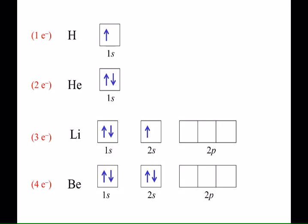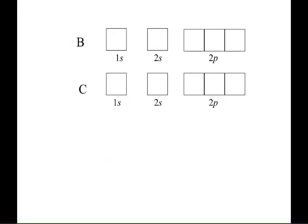Let's do a few more. Boron, atomic number 5. The 5 electrons look like this: 1, 2, 3, 4. And now we get to put one electron in one of those three degenerate orbitals.